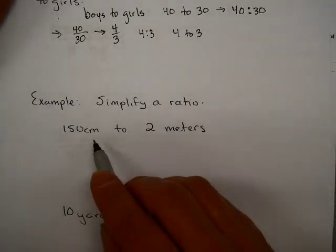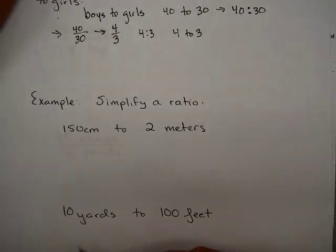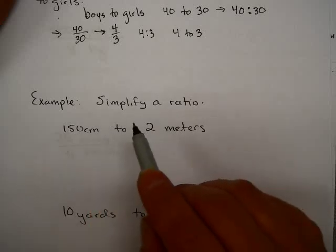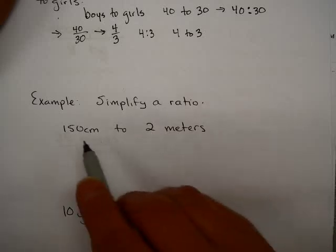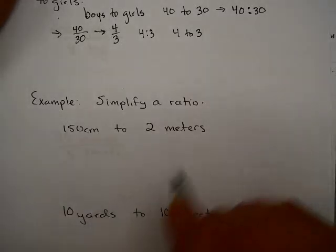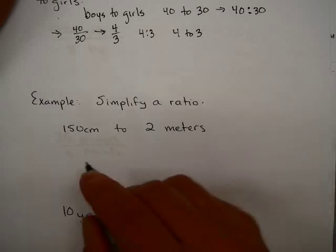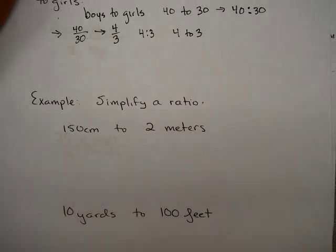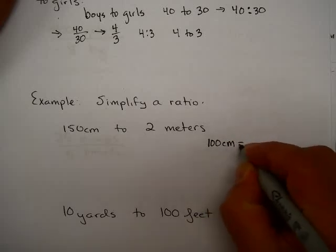Ratios are pretty easy to deal with unless you have different units. Here's an example where we will simplify a ratio: 150 centimeters to 2 meters. In the first example, boys to girls, both groups were the same thing, namely people. Here we have two different units of measure. We need to have the same units. I have a preference to always go to the smaller unit. In this case, that would be centimeters. You might remember that 100 centimeters equals 1 meter.